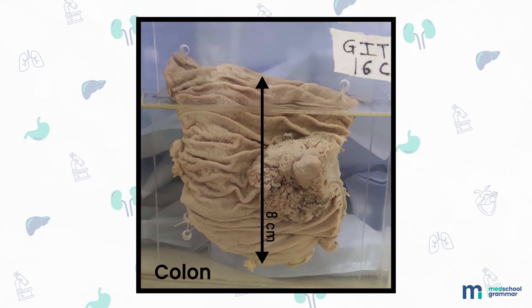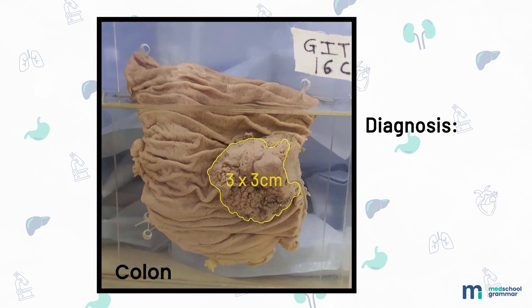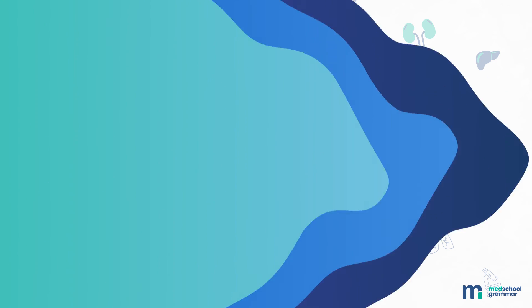Lastly, we have a specimen of a segment of the colon measuring 8 centimeters in length. The external surface shows a congested serosa. The mucosal surface shows a fungating, cauliflower-like growth measuring 3 by 3 centimeters, grayish-white in color. This is a specimen of carcinoma of the colon. That brings us to the end of this video — I hope this helps you answer more confidently in your viva. Stay tuned for more videos in this series and see you in the next one.